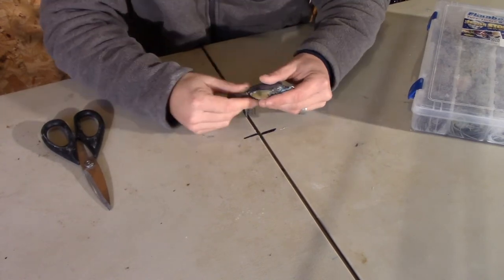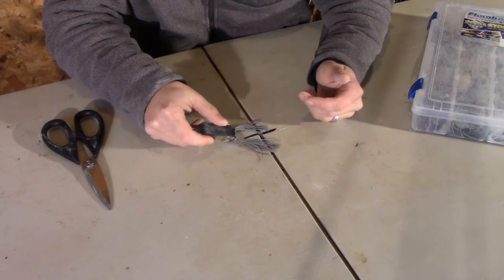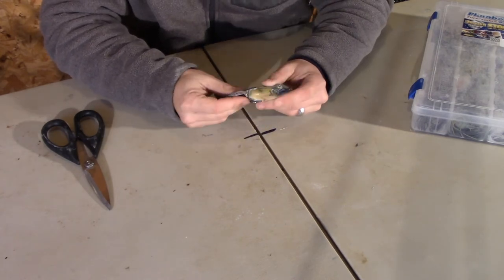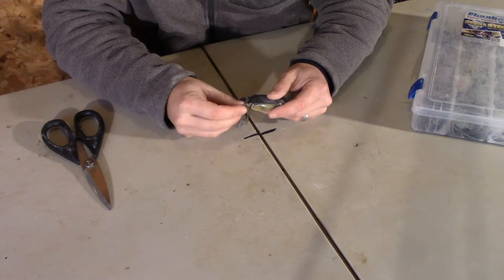Now a lot of people ask, well, how long do you like the legs? The thicker the grass I'm fishing in, the shorter I like the legs. If I'm fishing super slop to where it's just essentially on top...